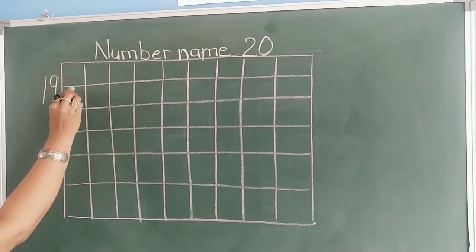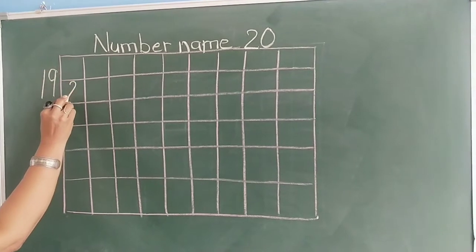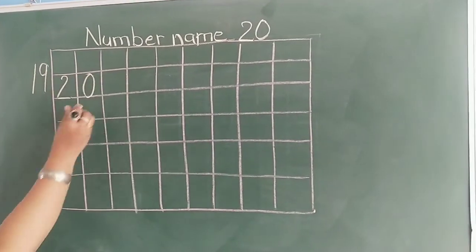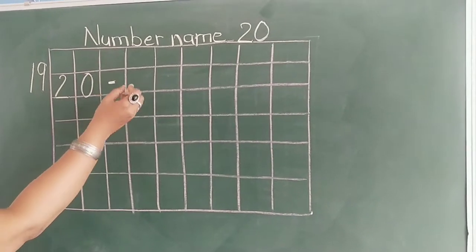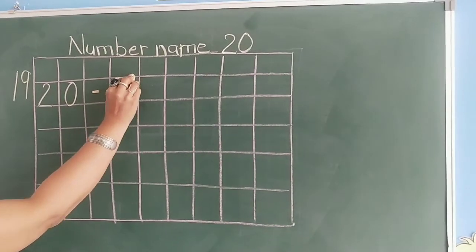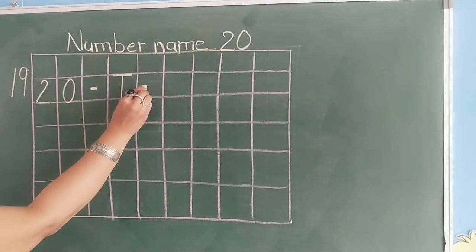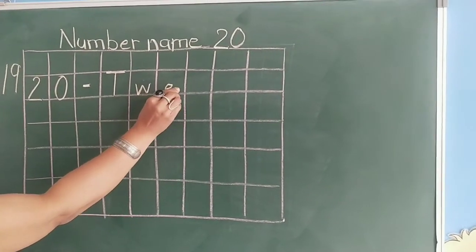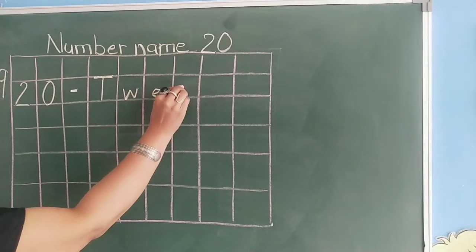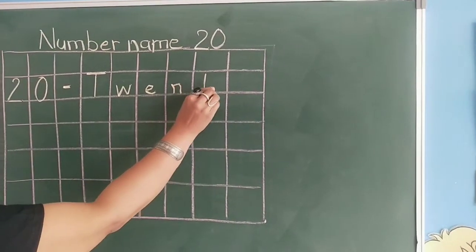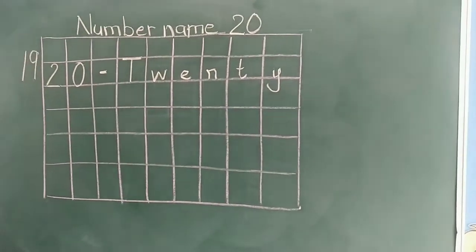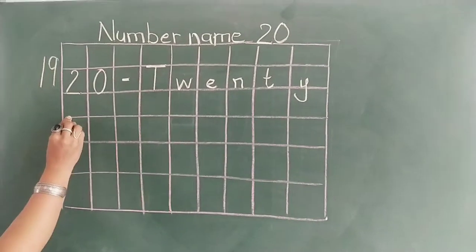So in this first line, write down here 2, 0, 20. Small dash, write down number 20. T, W, E, N, T, Y, 20. You have to read aloud while writing.